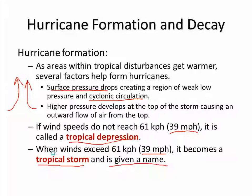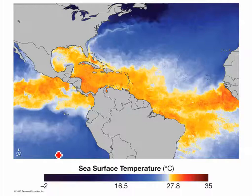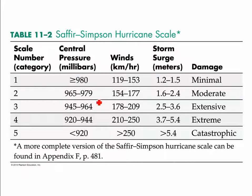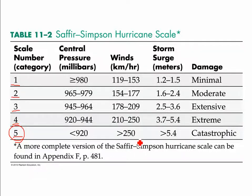Once the wind speed exceeds 74 miles per hour, it becomes a Category 1 hurricane, and then onwards up through Category 2, 3, 4, and 5. So we know Gaston has achieved wind speeds of 155 miles per hour, or more than 250 kilometers per hour.